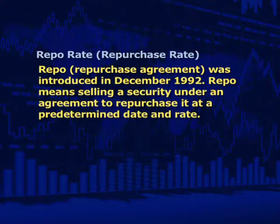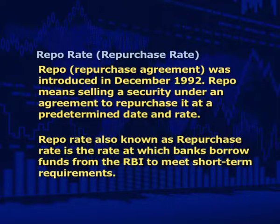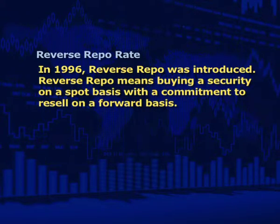Repo rate: the repurchase agreement was introduced in December 1992. Repo means selling a security under an agreement to repurchase it at a predetermined date and rate. Repo transactions are effected between banks and financial institutions, and among banks themselves; RBI also undertakes repo. Repo rate, also known as repurchase rate, is the rate at which banks borrow funds from RBI to meet short-term requirements. RBI charges interest on the cash borrowed by banks — this is called the repo rate. If RBI wants to make it more expensive for banks to borrow money, it increases the repo rate; if it wants to make it cheaper, it reduces the repo rate.